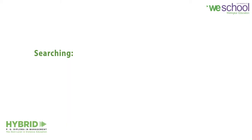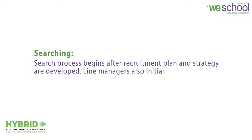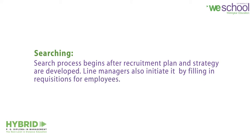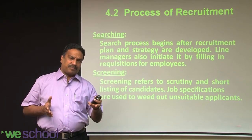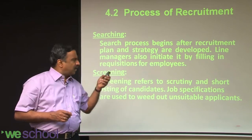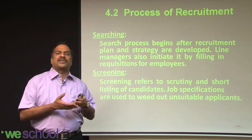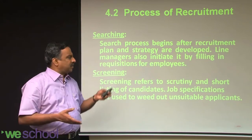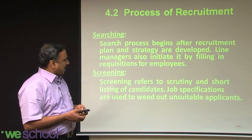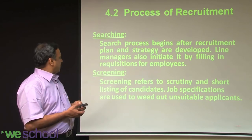Searching begins after the recruitment plan and strategy are developed. Line managers initiate the process by filling in requisitions for employees. For example, an operations manager becomes a line manager who may need to hire a production engineer. He sends a requisition slip to HR, who incorporate it into the strategy and begin the recruitment process. This is the searching operation.